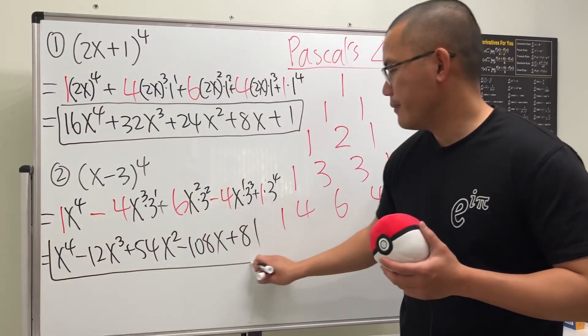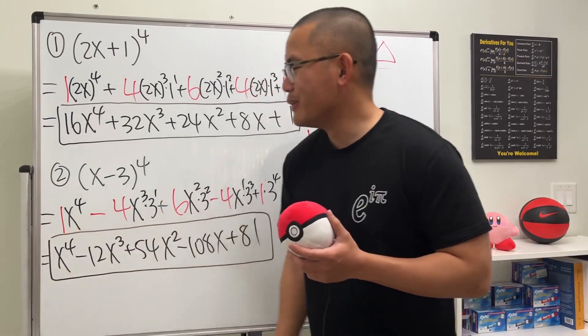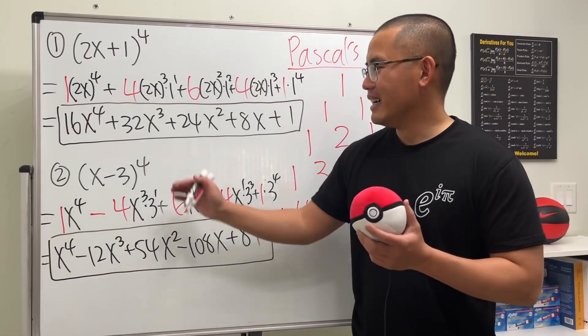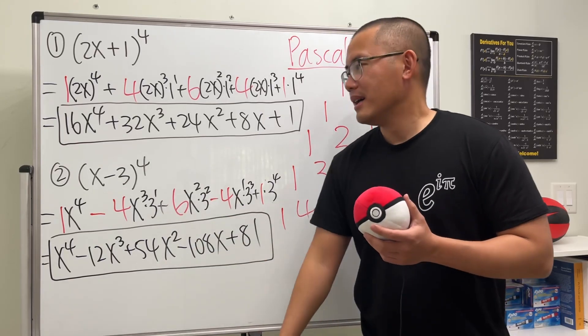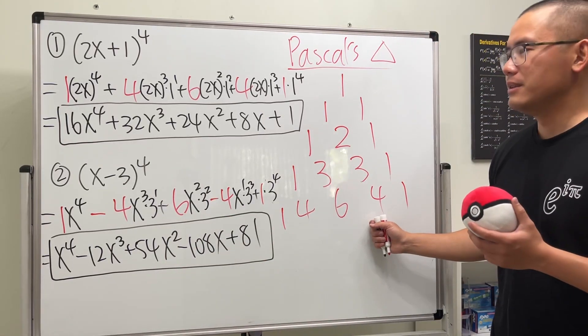This is it. This is how you expand a binomial to a bigger power. Use the Pascal's triangle. It's much better.